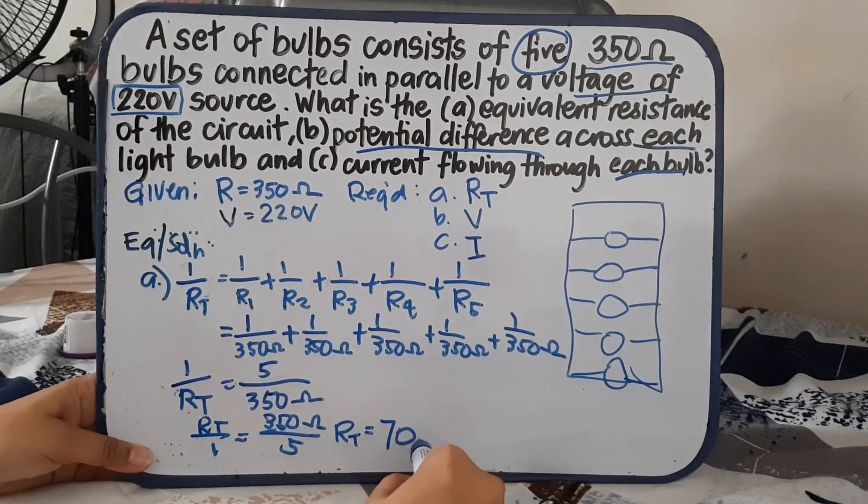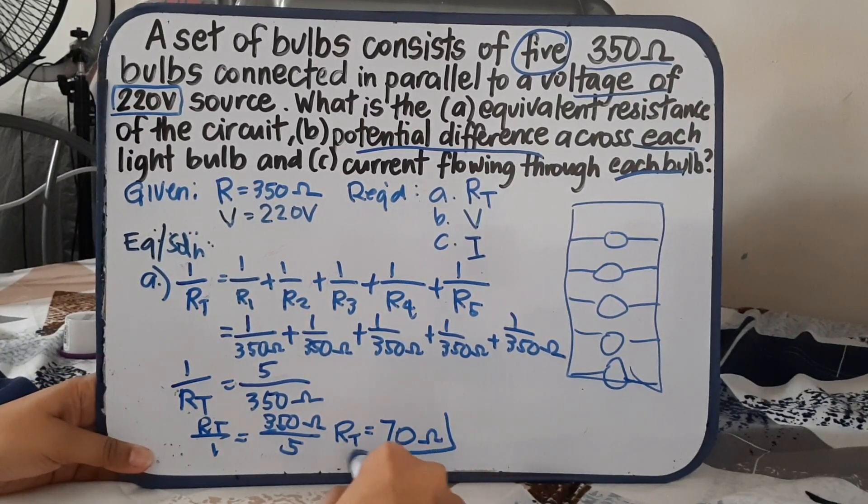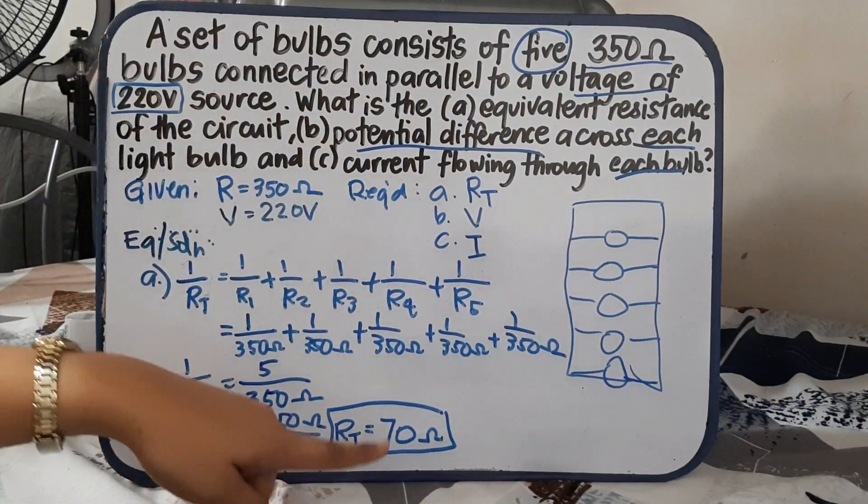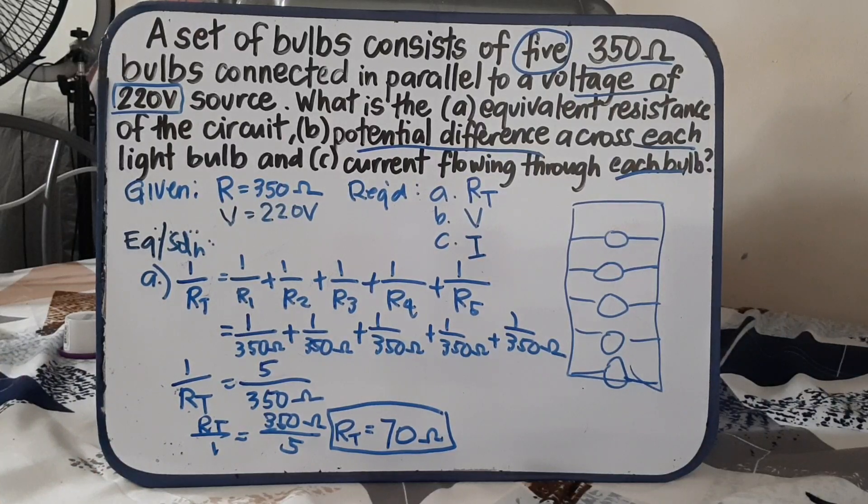So the answer will be our total resistance is 350 divided by 5. That is 70 ohms. It means our total resistance, the resistance of 5 bulbs is equivalent to 70 ohms.